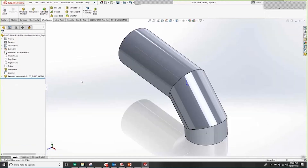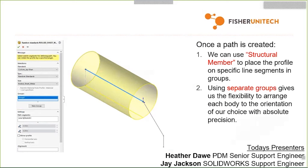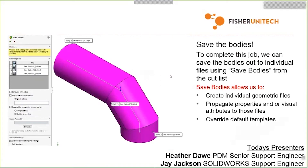I can set the rotation on each group. For group one, I want the seam at 90 degrees. The second section is alternated, so it stays where it is. For group three, I set it to 90 degrees again. I'll hit the green check, and with essentially one feature I've recreated what took a number of different features and operations — and we're not even done yet. We're 90% there with just that one feature.